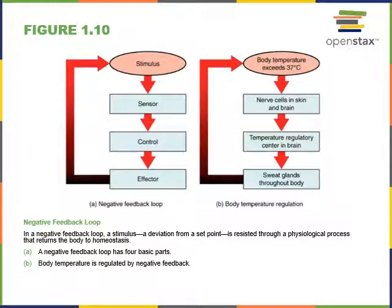Another major theme in anatomy and physiology is the concept of homeostasis — a state of balance in which the body's internal environment remains relatively stable despite changes in the internal and external environment. A homeostatic control mechanism maintains homeostasis and involves a variable being regulated, which is maintained within a set range called the homeostatic set point. If the variable changes outside of that set point, that change is a stimulus.